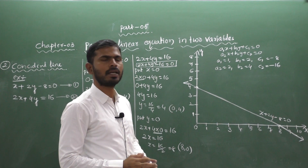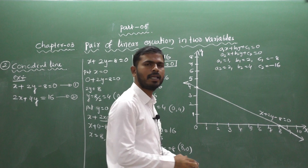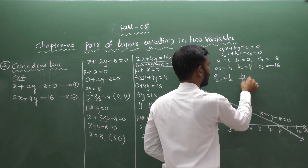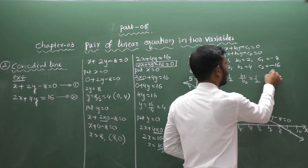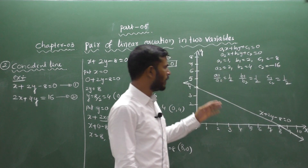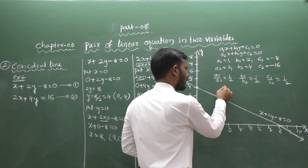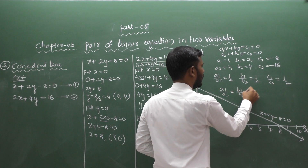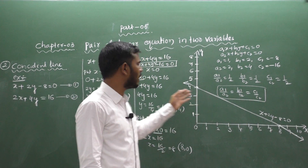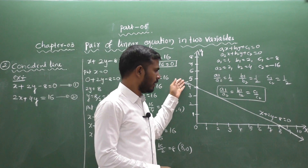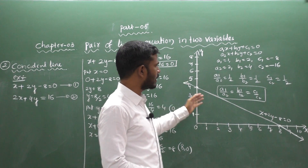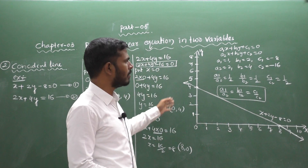Now compare the ratios: a1 by a2 equal to 1 by 2, b1 by b2 equal to 2 by 4 equal to 1 by 2, and c1 by c2 equal to minus 8 by minus 16 equal to 1 by 2. Since all three ratios a1/a2 equal b1/b2 equal c1/c2, the pair of linear equations is a coincident line.